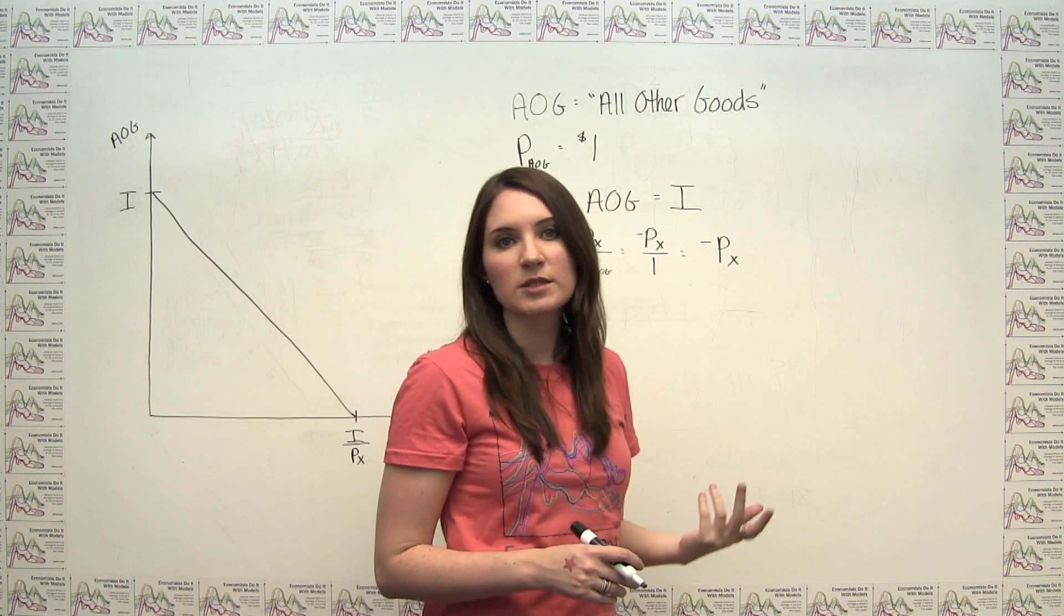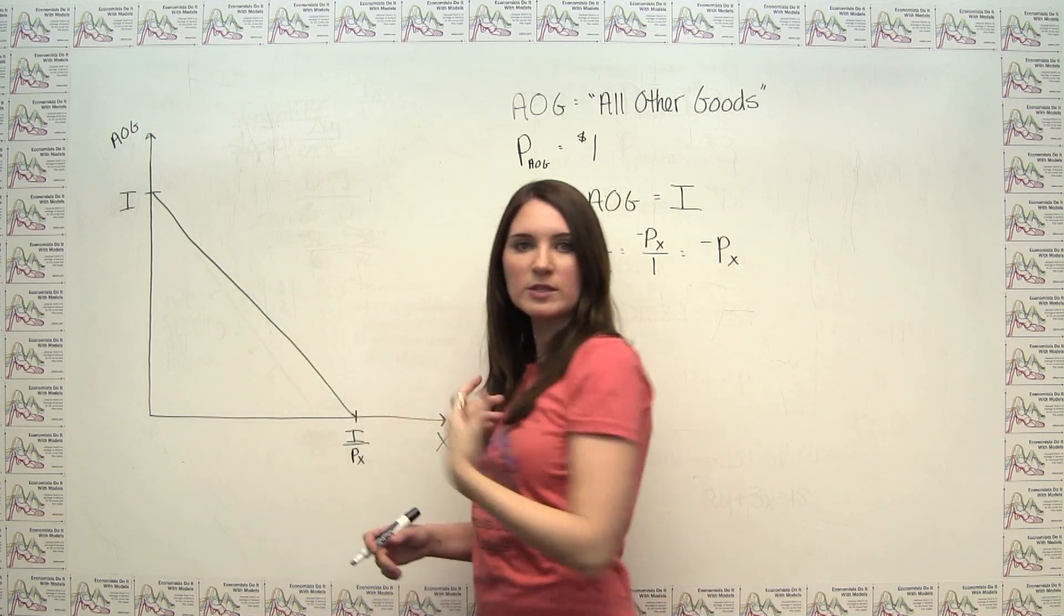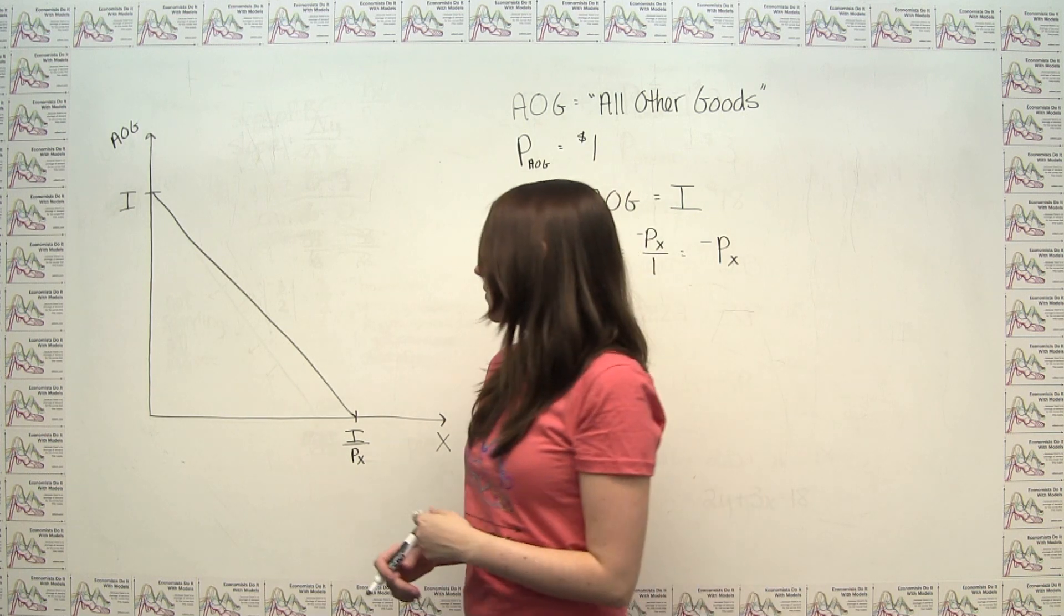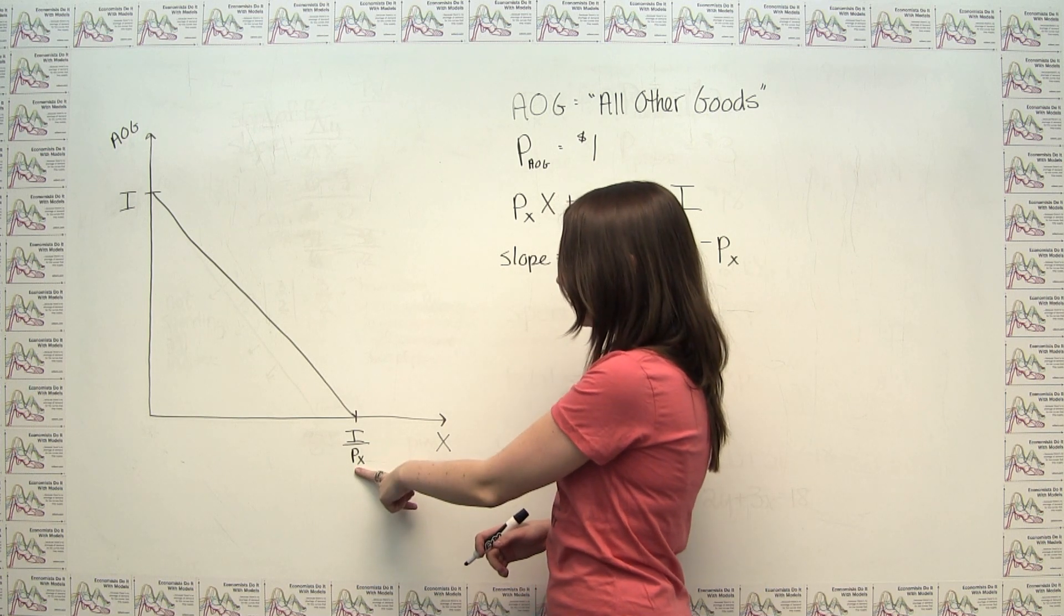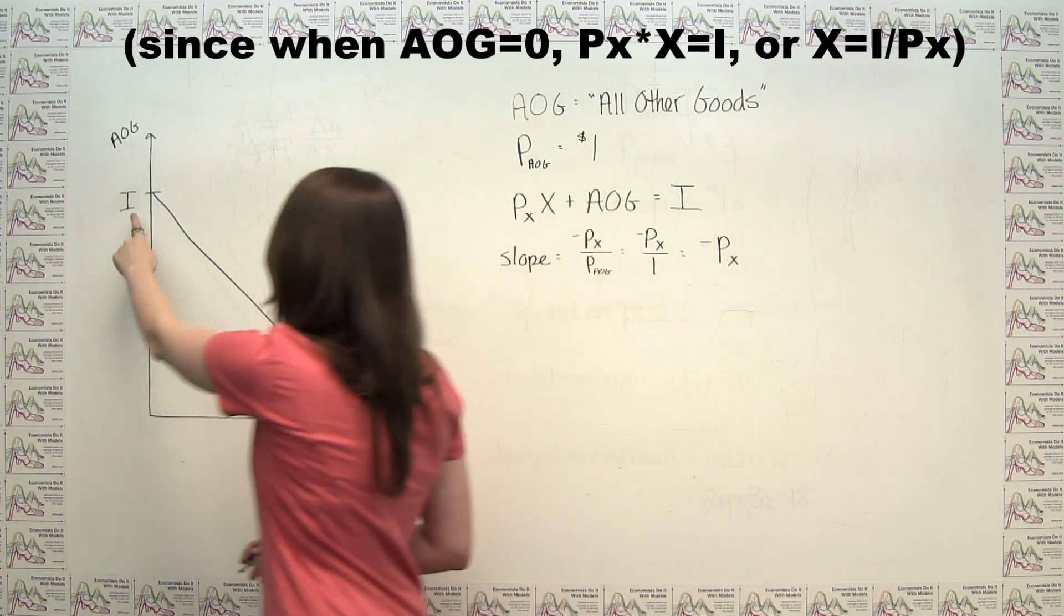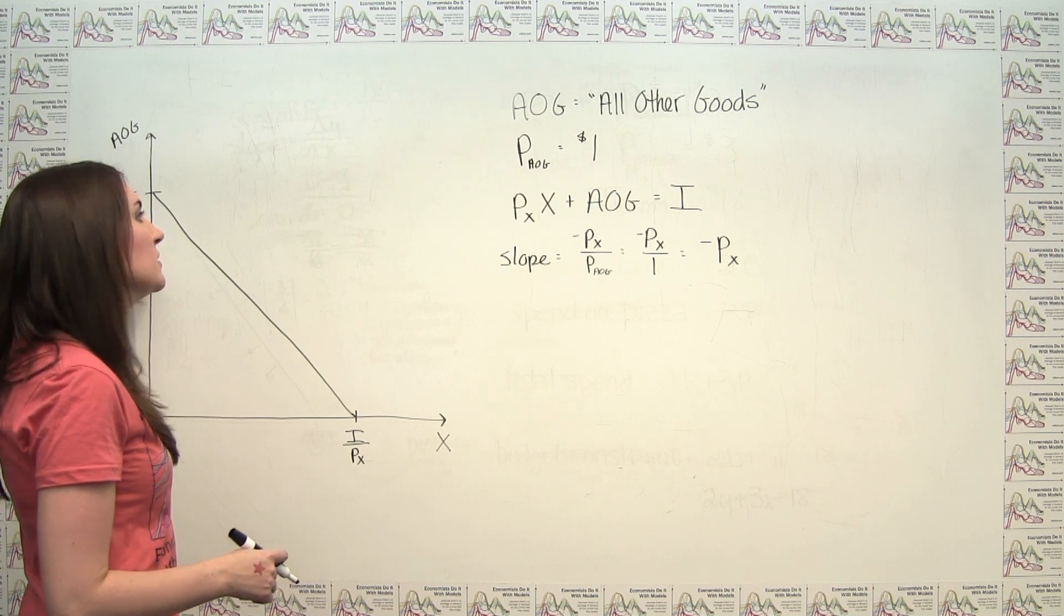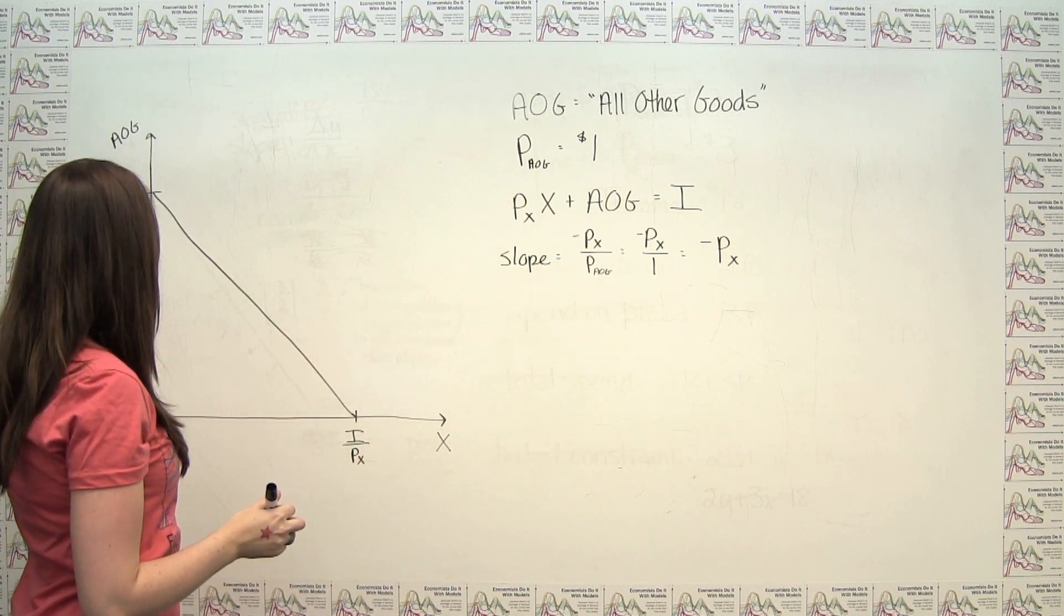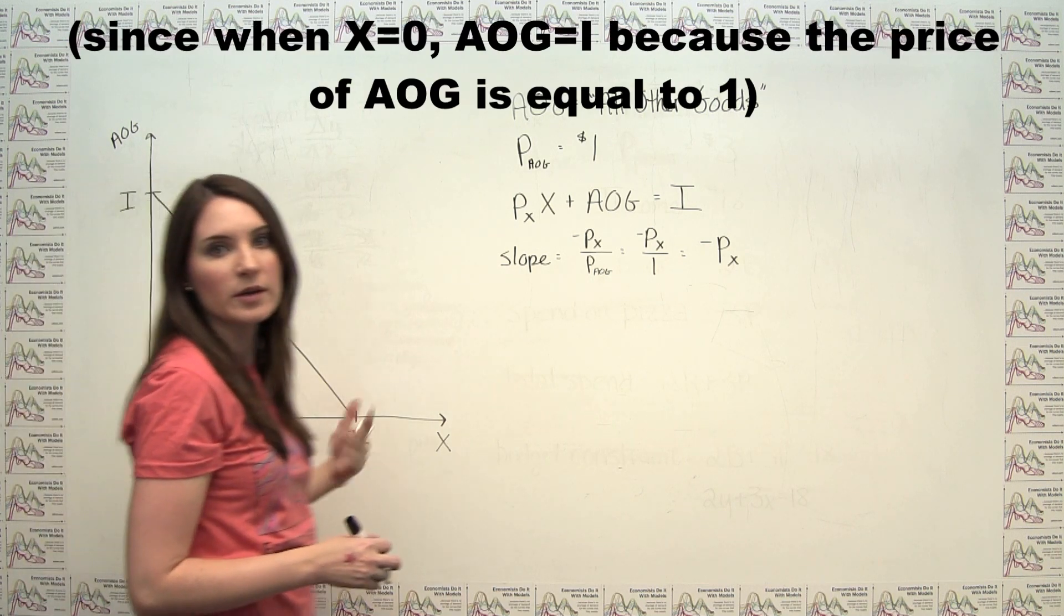So when we're defining the budget constraint in this way, the magnitude of the slope of our budget constraint is just the price of the good on the x-axis. And we can see here also, we can think about our intercepts. Our intercepts, as before, is at I divided by the price of x here. But then, if we're spending all of our income on this all other goods basket, and each share in the basket costs one dollar, then we can buy, at most, I shares in that basket. So the intercept over here is just going to be our income.